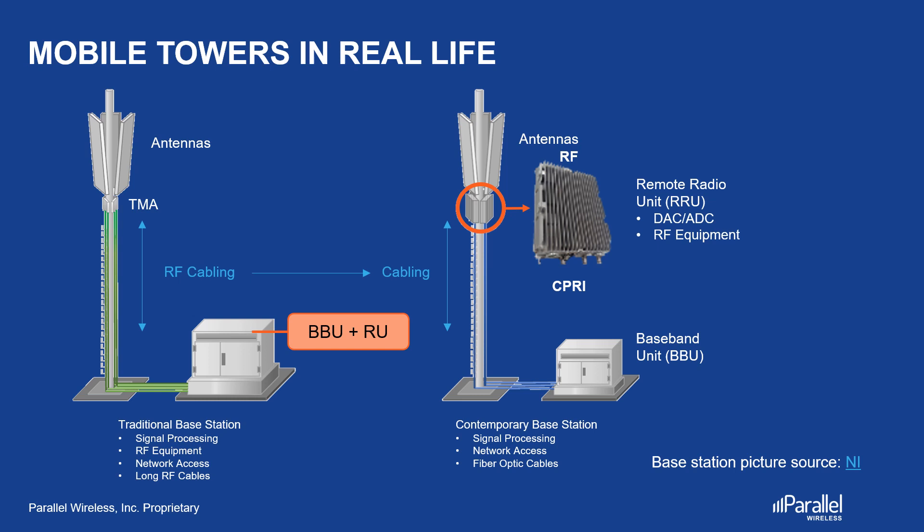As a result, during the later phases of 3G and during 4G rollout, the industry moved to a new approach that worked better. Instead of sending RF signals from the cabinet to the antennas, the RF equipment was moved close to the antennas. This ensured the RF signal loss was kept to a minimum. This new piece of electronics is known as the remote radio unit, RRU, or remote radio head, RRH.